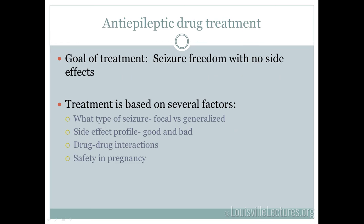Our goal for treatment is seizure freedom. It makes me cringe seeing patients who have had epilepsy for 15 to 20 years, still on Dilantin, still having two or three seizures a month. Seizure freedom is always the goal — it may be more realistic in some patients than others, but we don't stop trying. There are a lot of seizure medications and new interventions available, so we constantly adjust treatment plans. Side effects are tied to compliance: if someone can't tolerate a medication, they won't take it.